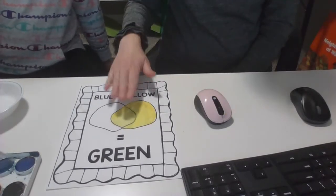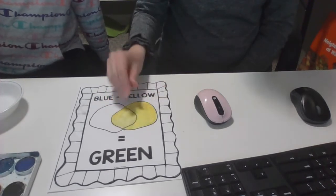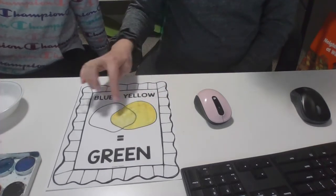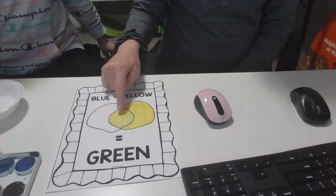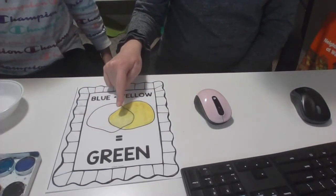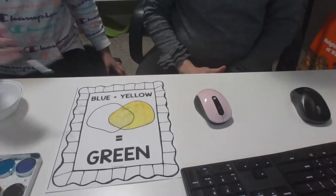So now we're going to paint the blue section. When we overlap with the yellow, I want you to pay attention to see what's going to happen. Let's give it a try.